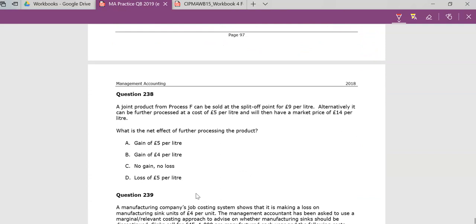Question 238 is a remnant from one of the earlier questions we did on joint costs, joint products. So currently, it says that at the split-off point, you can sell this product at the split-off point. You've made it, and you can sell it now for nine. And it's asking you, okay, if you do some more work on it, some further processing, it's going to cost you five.